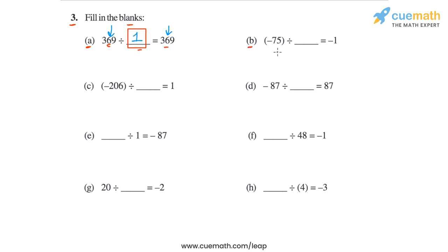Then in part b, we have the statement minus 75 divided by blank is equal to minus 1. To find the divisor, let's ignore the negative signs for a moment. The magnitude of the dividend is 75 and the magnitude of the quotient is 1. What number can 75 be divided by to get 1? That number is 75. Now, since the dividend minus 75 is negative and the quotient is also negative, the divisor must be positive. So the divisor is equal to 75.